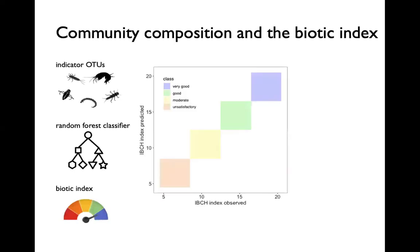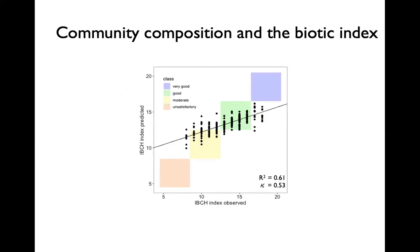We then assessed the agreement between the observed value, here on the x-axis, and the predicted value based on eDNA, here on the y-axis. The random forest approach successfully predicted the classification for 71% of all samples. With an R squared of 0.61 and Cohen's kappa of 0.53, this indicates a good agreement between the two methods.